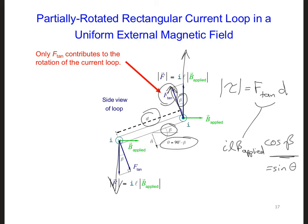Now we can write tau, the magnitude, is equal to I, L, D, times B applied, times sine of theta. Then if we identify L times D, well that's just the area of the loop, then we have I, A, B applied, sine of theta.